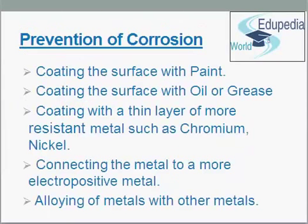Now, prevention of corrosion. How can we prevent corrosion? Corrosion is a spontaneous irreversible process and cannot be reversed or stopped. It can only be slowed down. There are several methods which we use to prevent corrosion. First, coating the surface of metals with a thin layer of paint or varnish. Second, coating the surface of metals with oil or grease.